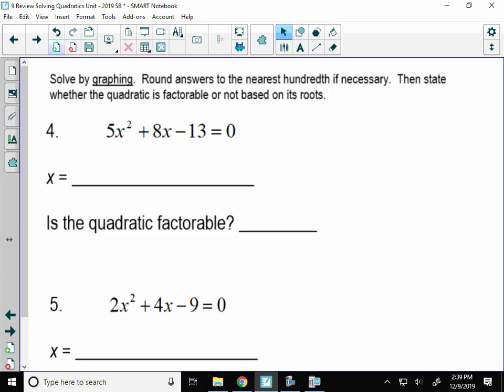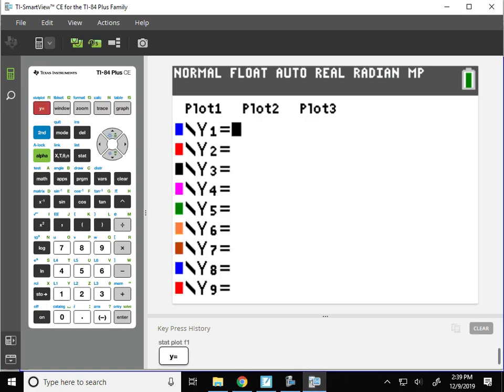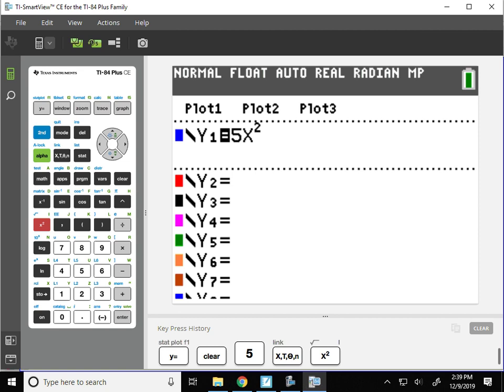My first quadratic is 5x² + 8x - 13 = 0. I'm going to type that into the y equals on my calculator and hit graph.